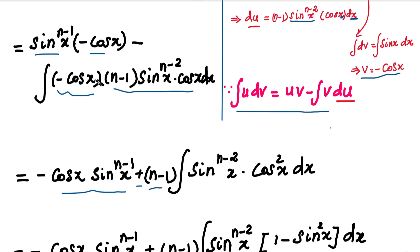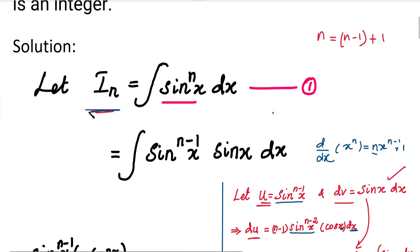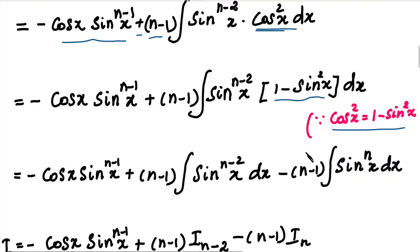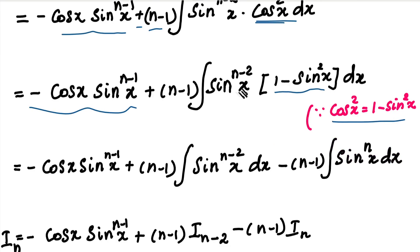So, the integral of sin^n(x) is now expressed. We substitute cos²(x) = 1 minus sin²(x). So for cos² value, we have 1 minus sin²(x). On the next step, the first term stays, and the second term becomes the integration of sin^(n-2)(x) into 1, minus sin^(n-2)(x) into sin²(x). That gives us two terms.